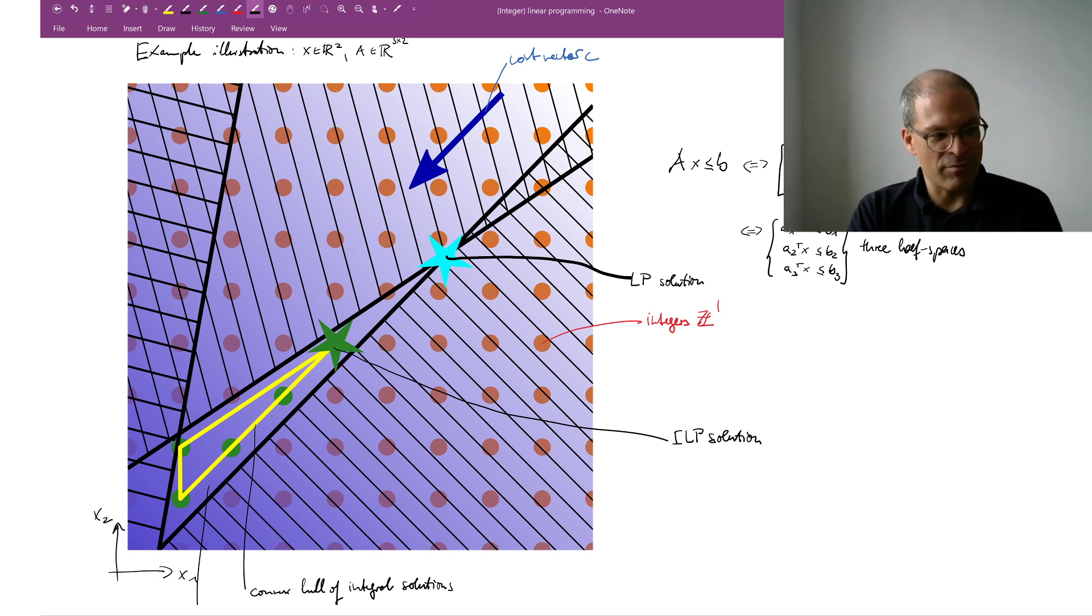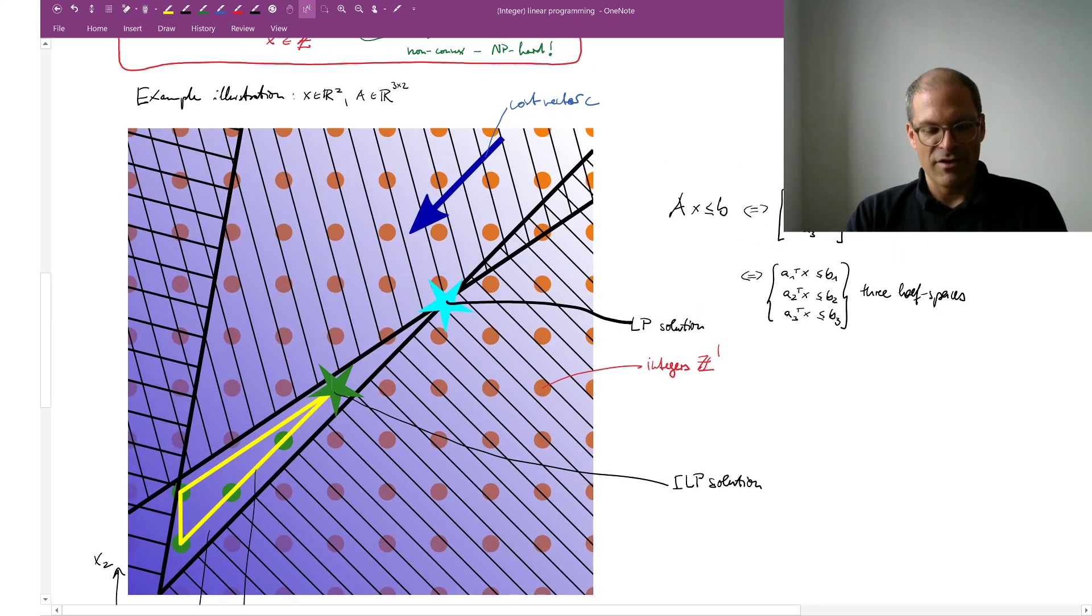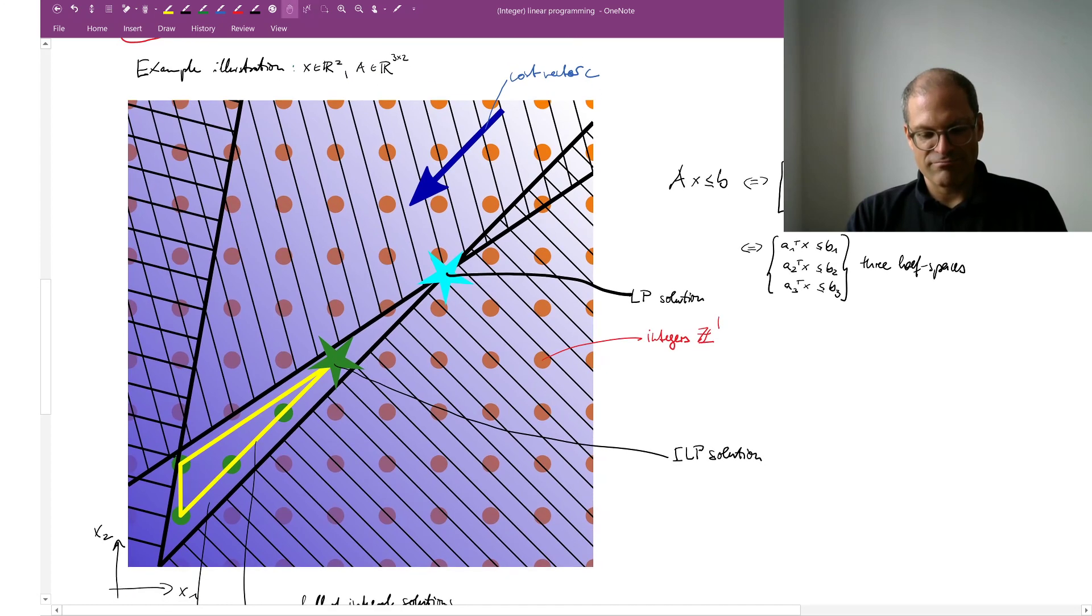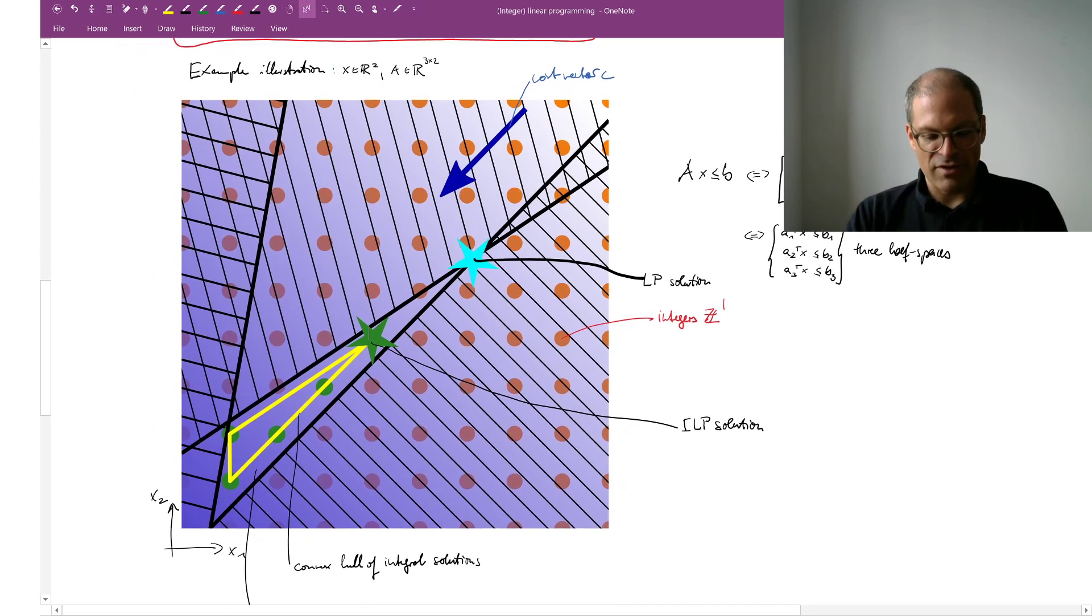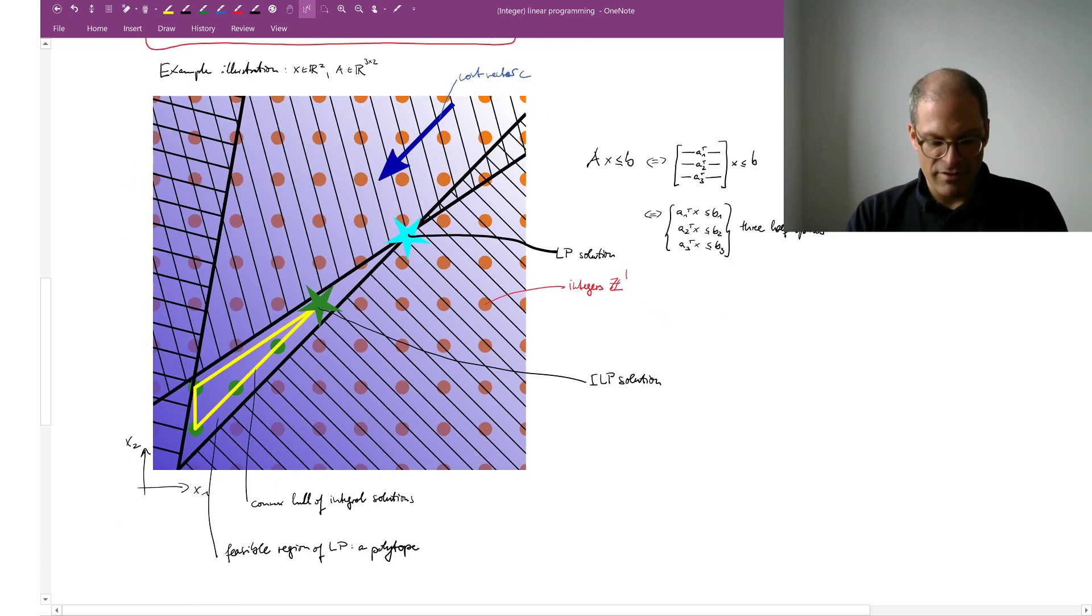If you now don't have an optimization problem in two dimensions but in a thousand dimensions, which is completely realistic, then imagine how this number of close by integer neighbors explodes and none of them need be feasible. Hence the difficulty of solving integer linear programs to optimality. Of course there are heuristics, but depending on the instance these problems can really be super hard to solve.